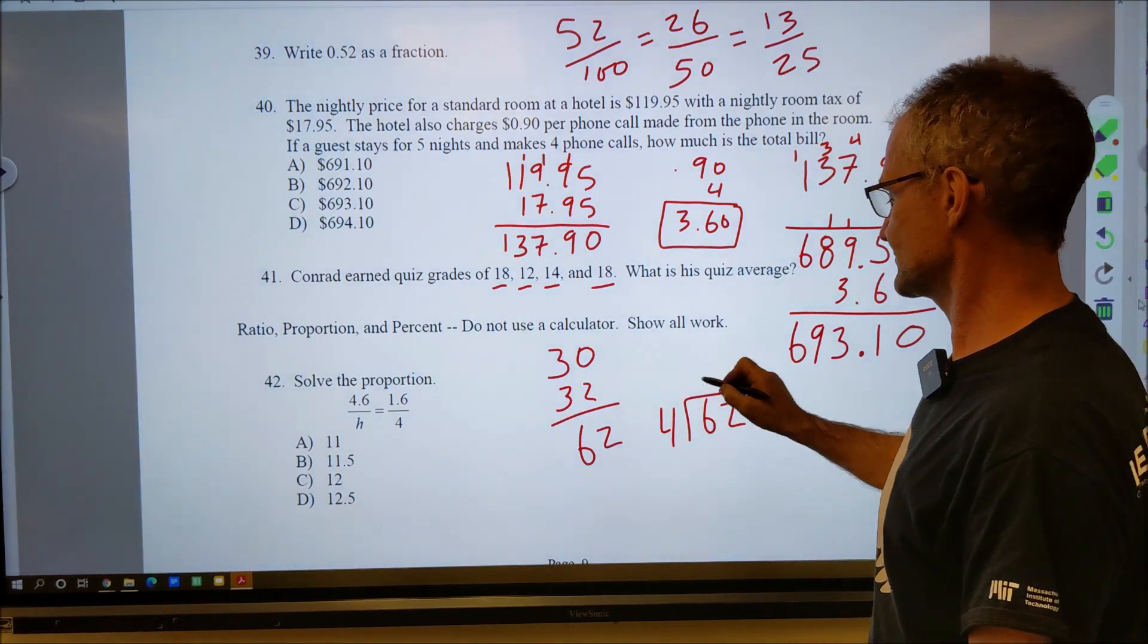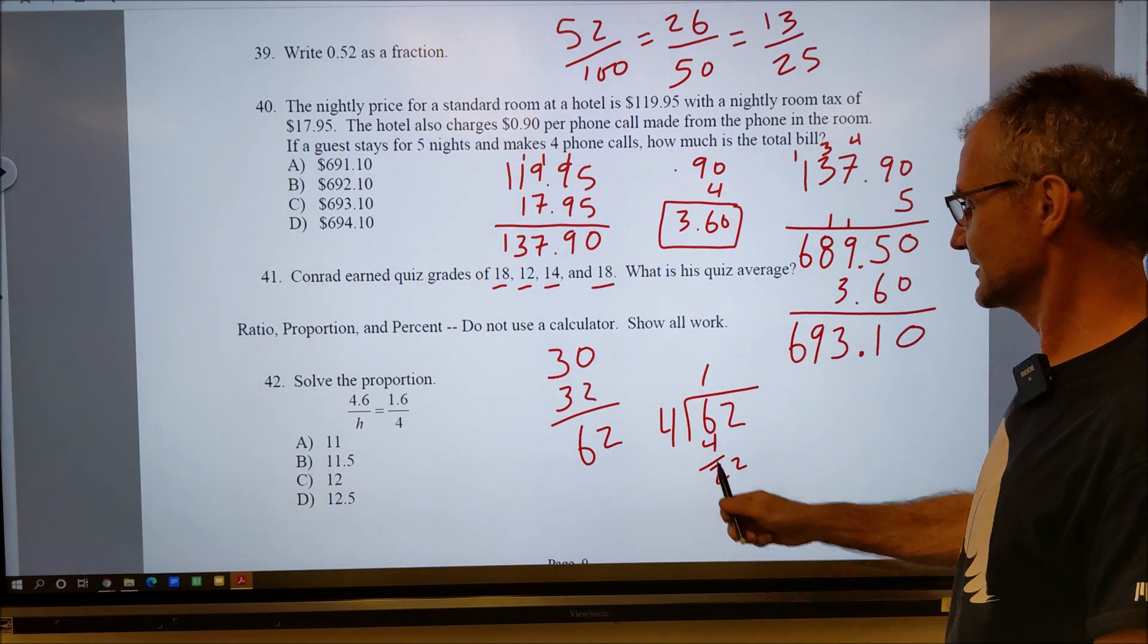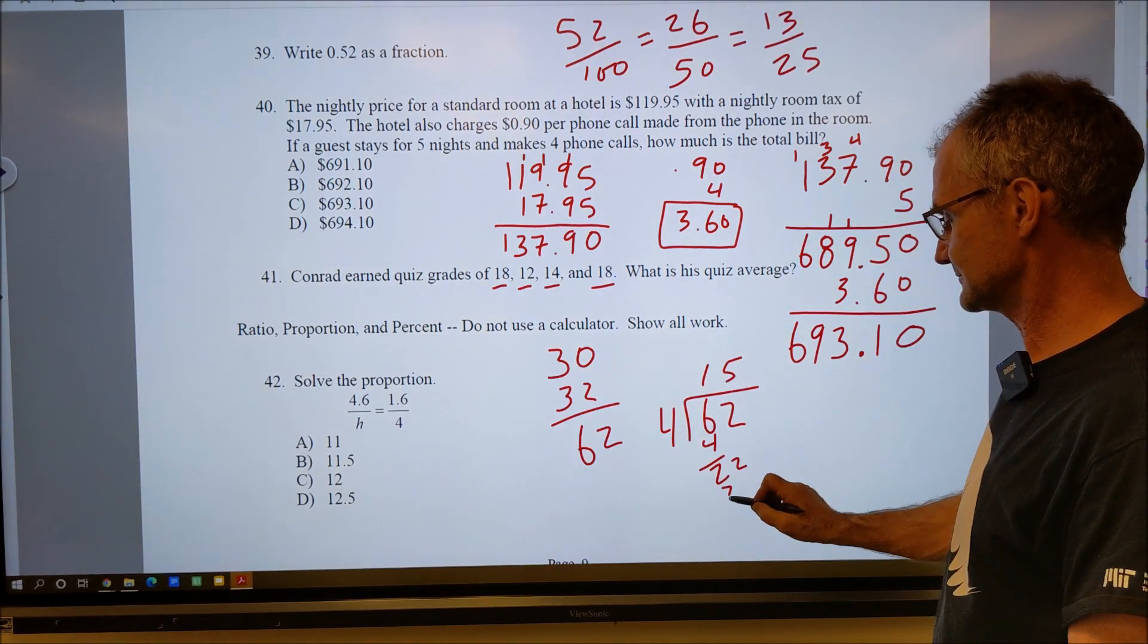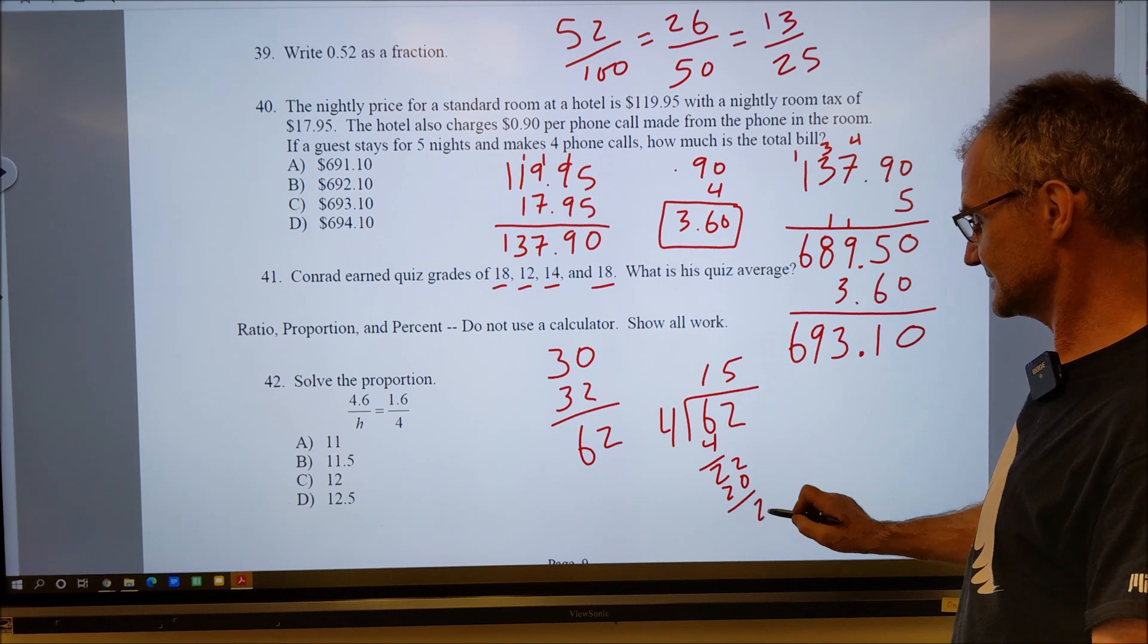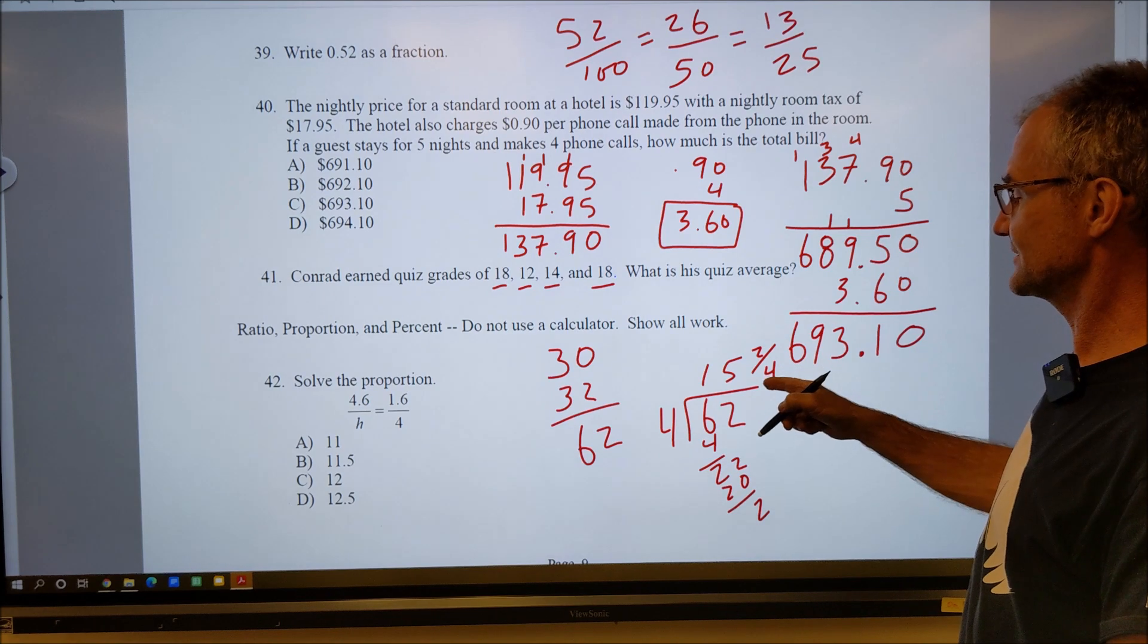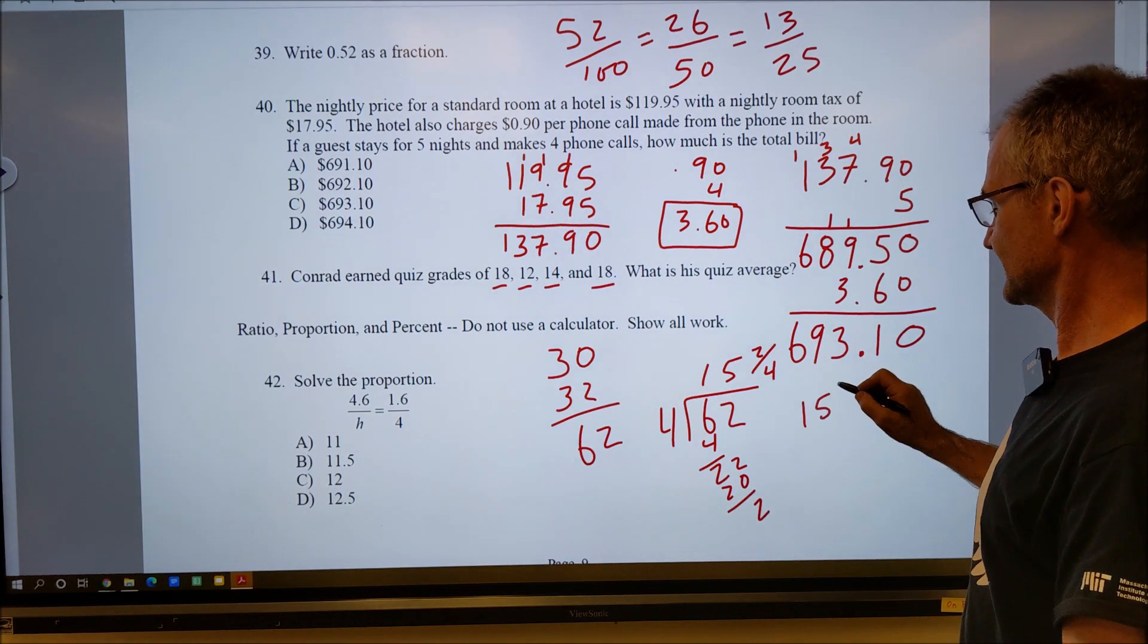Four goes into six one time. Six minus four is two. Four into 22, it'll only go in there five times, it'll give me 20. Two minus zero is two. So I have 15 and two-fourths, and that could be reduced to 15 and a half.